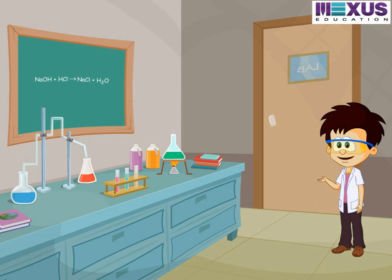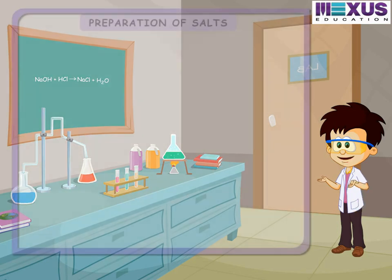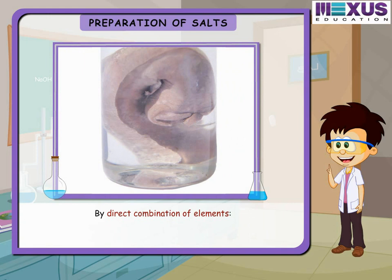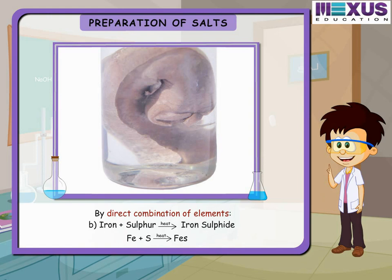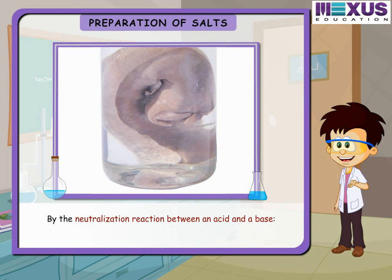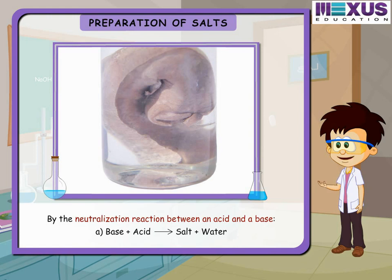Let us now learn the different methods of preparing salts. By direct combination of elements: sodium added with chlorine gives sodium chloride; iron added with sulfur gives iron sulfide. By the neutralization reaction between an acid and a base: NaOH (dilute) + HCl (dilute) → NaCl + H₂O.